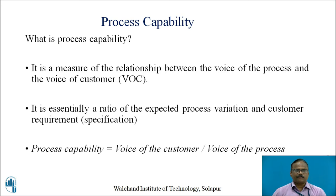Process capability is a measure of the relationship between the voice of the process and the voice of the customer. One is relevant with the process and another with the customer, because the customer gives specifications for a product and the process must follow a mean in order to get dimensions within the tolerance. It is essentially a ratio of expected process variation to customer requirements — process capability equals voice of customer divided by voice of the process.